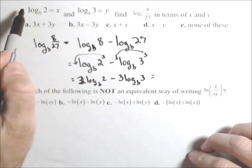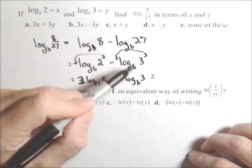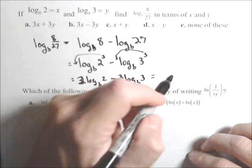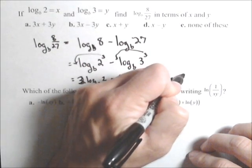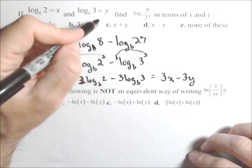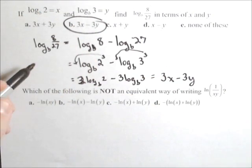Now from what we were told earlier, log base b of two is x, log base b of three is y. So we end up with three x minus three y in terms of x and y. So answer b.